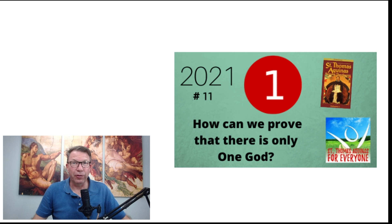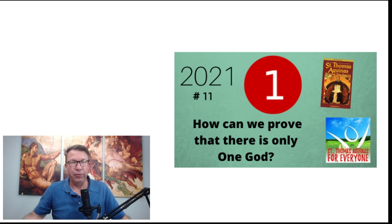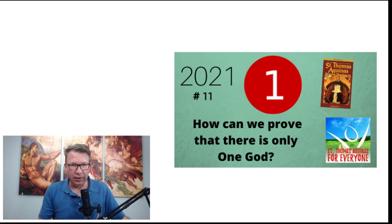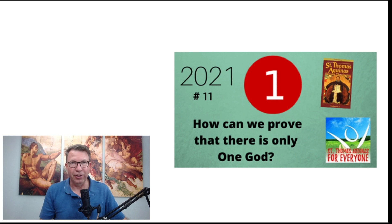Hi there, thanks for joining me for this last video as we go through the attributes of God. We've done six so far, and the last attribute of God is that He is One, otherwise known as the unity of God. I call this video, 'How Can We Prove That There Is Only One God?'